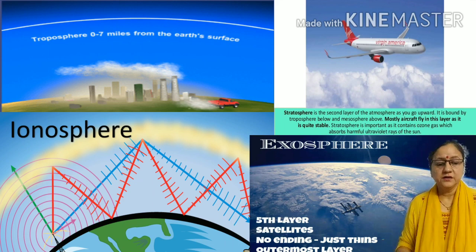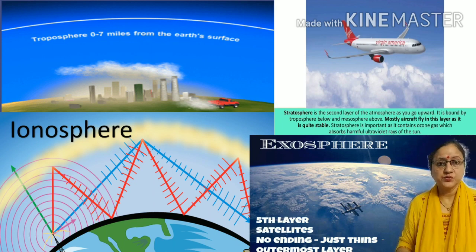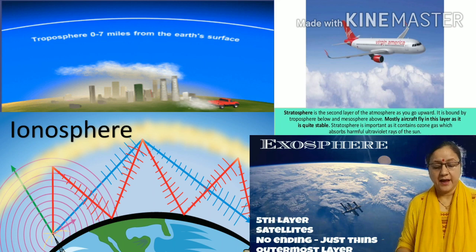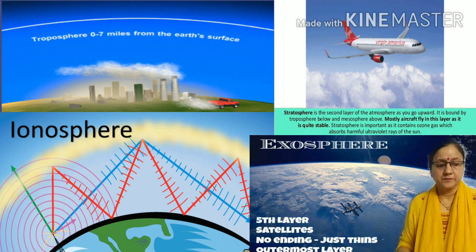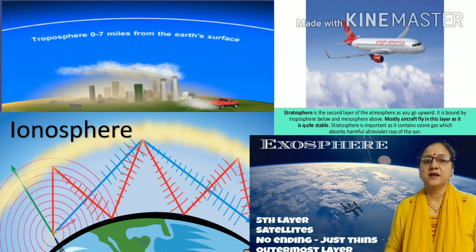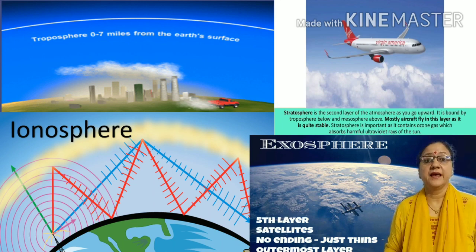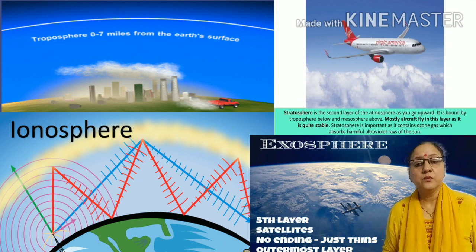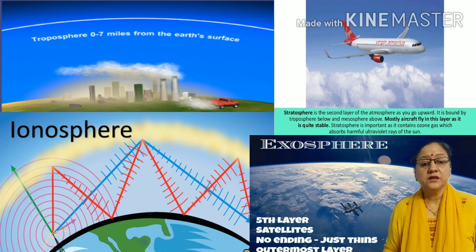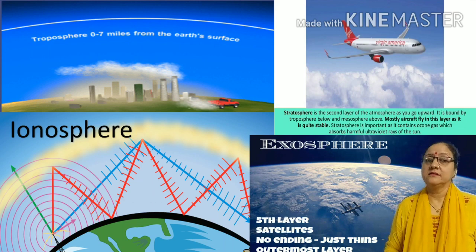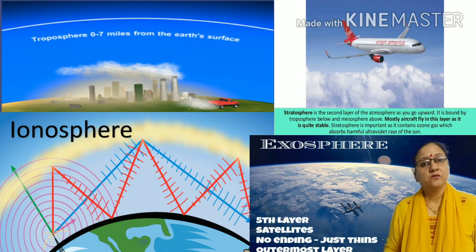Ionosphere is a thin layer with electrically charged particles that help radio waves to work. It is found just above the stratosphere. The last layer of the atmosphere from the earth's surface is the exosphere. It is the uppermost layer of the atmosphere with very little air, and there is no earth's gravity working there.